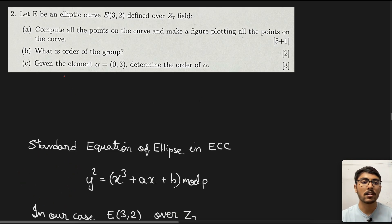Today we are going to look at another topic in elliptic curve cryptography. Let's read the question. Let E be an elliptic curve defined over Z7 field. Compute all the points on the curve and make a figure plotting all the points on the curve.